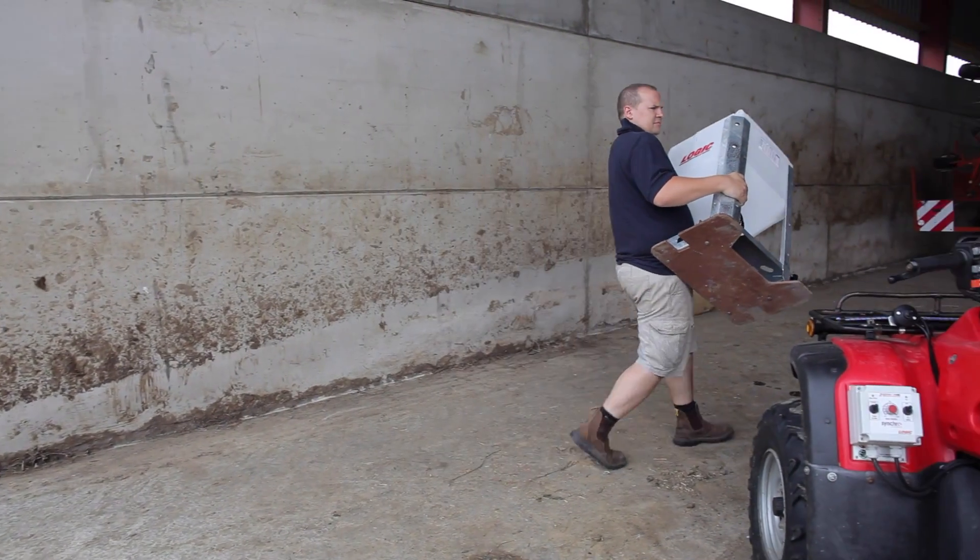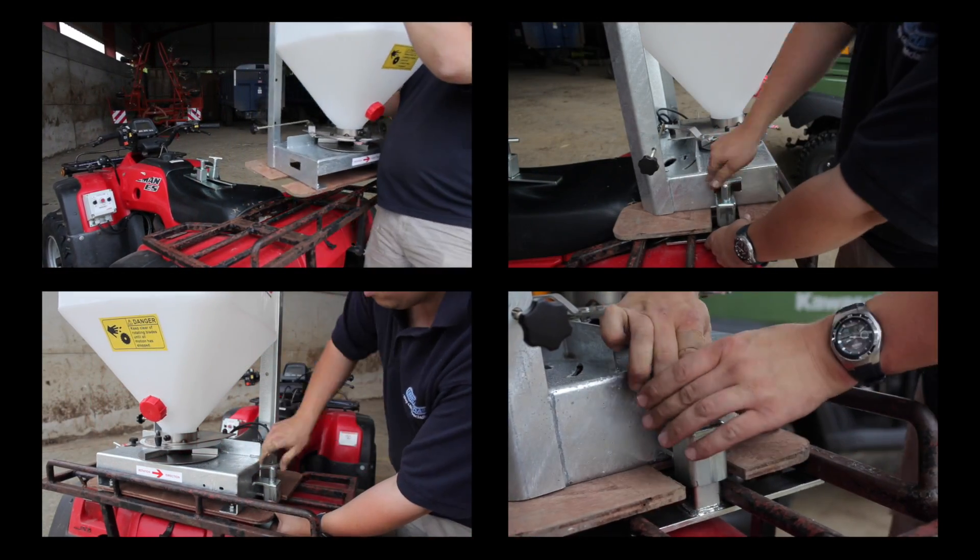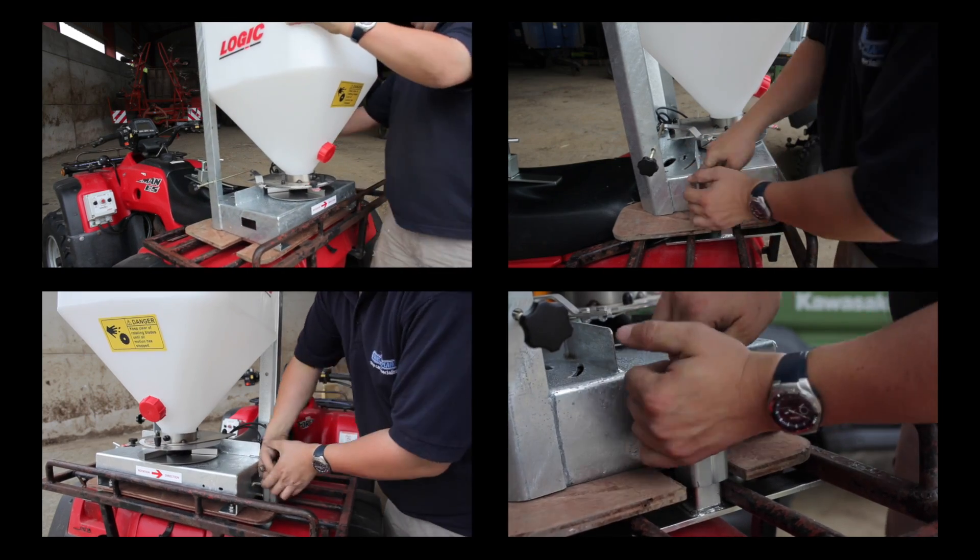The ATV mount kit with brackets allows the Broadcaster to quickly and simply be fixed to the ATV, with each of the two clamps securely holding the wooden base to the ATV rear carrier.